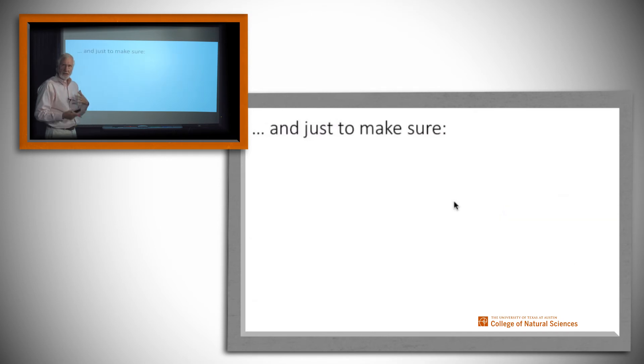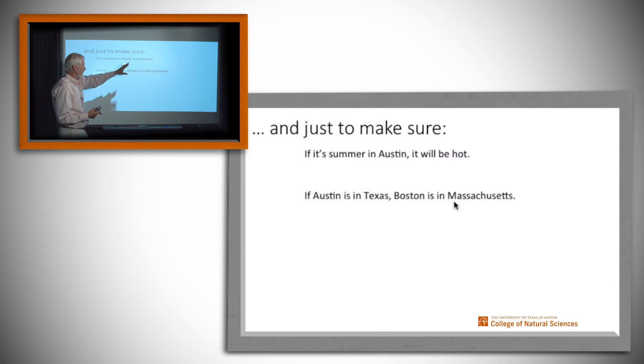Now let's just make sure with one more set of examples. If it's summer in Austin it will be hot. When it's summer in Austin, that's the antecedent. We believe that that's true. It will be hot, that's a consequent right there. We believe both of them are true, thus it's a true implication.